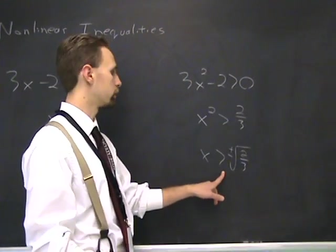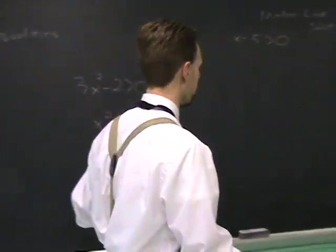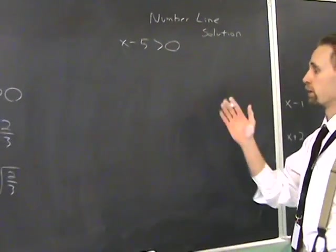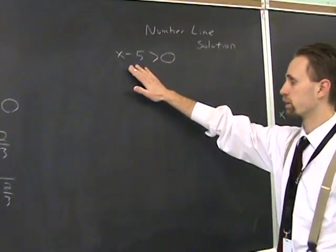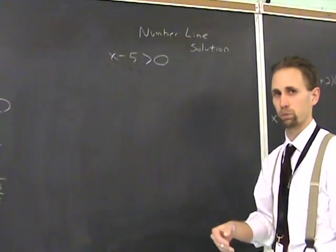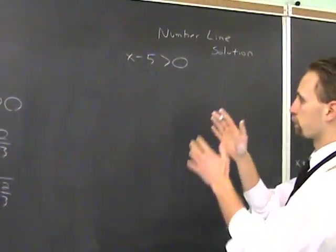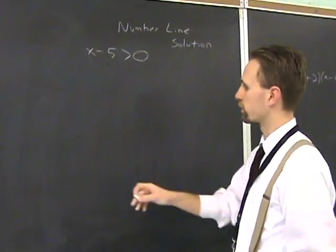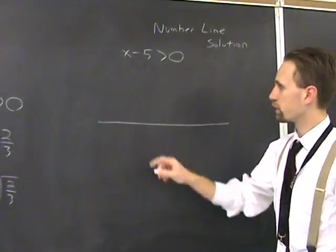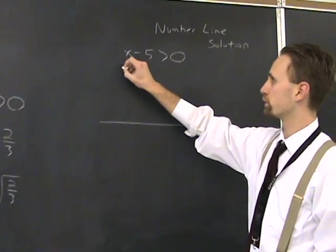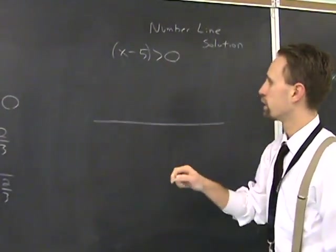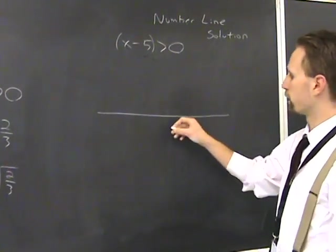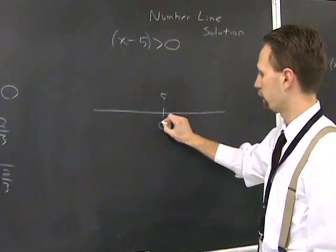The way that we have for solving these is I call the number line solution, the number line method. We're going to start it out with a linear inequality, which we could solve just with regular algebra, but apply this number line method to other more complicated things. What I'd like you to do is, you have this expression on this side. You see what values of x make that 0? And the answer is 5, at x=5, it's going to be 0.